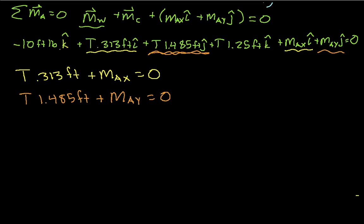And now we can do the moments in the z-direction. So here we have minus 10 foot-pounds, and then plus T times 1.25 feet, that's equal to 0. So there you go.